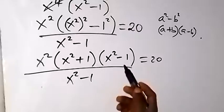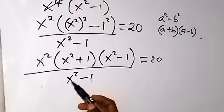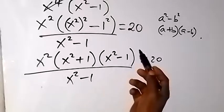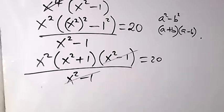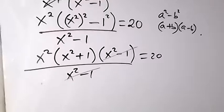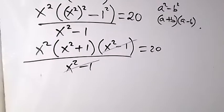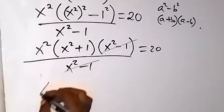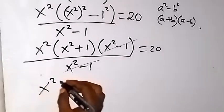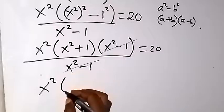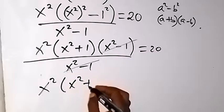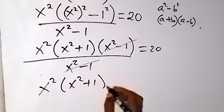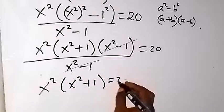The (x^2 - 1) in the numerator and denominator cancel each other, leaving us with x^2 times (x^2 + 1) equals 20.